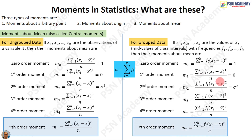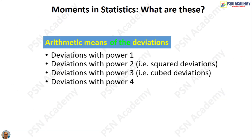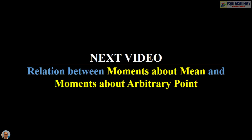Generalizing, the rth-order central moment is summation of fi times (xi minus x-bar) raised to r, divided by n. So moments are nothing but the mean of the deviations — the deviations may be squared, cubed, or raised to power 1. In different forms of deviations you get different orders of moments. In the next video we will deal with the relation between moments about the mean and moments about an arbitrary point.